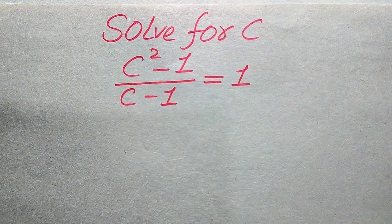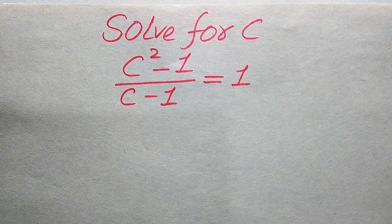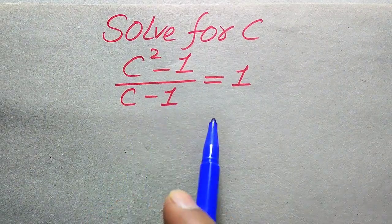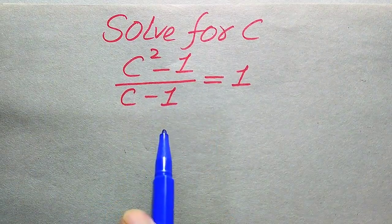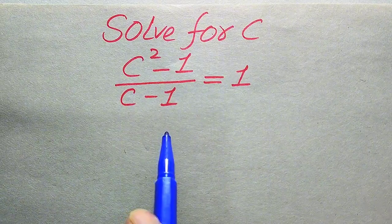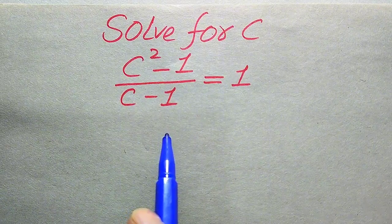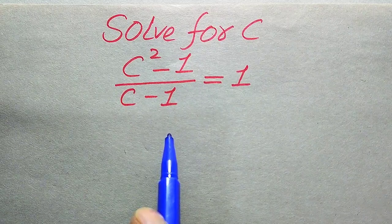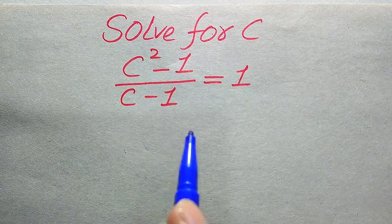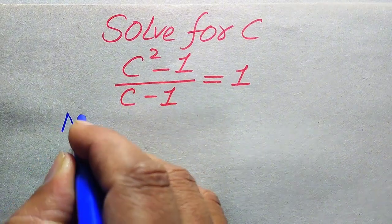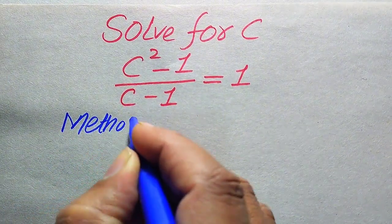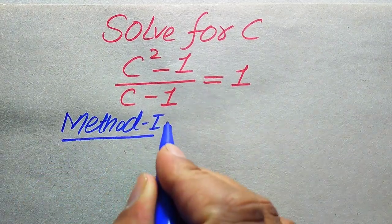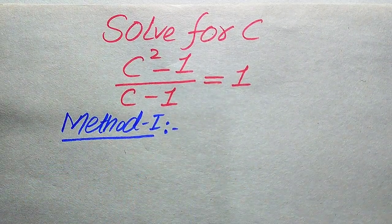Hello everyone, welcome. We solve this algebra problem: (c² - 1) / (c - 1) = 1. First, we need to find all the roots of this equation, and at the end we will verify which roots are solutions and which are extraneous roots. We'll solve this problem using two methods — I hope you like both. If you have another method in mind, please write it in the comment section.